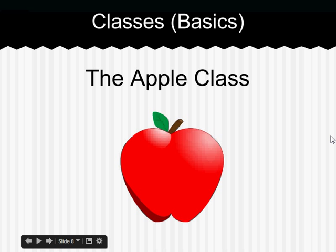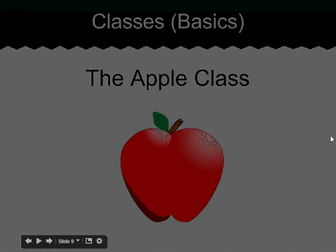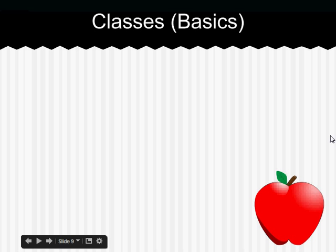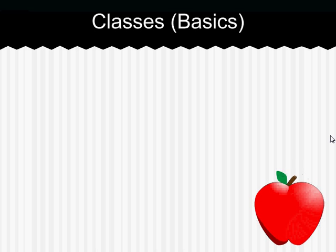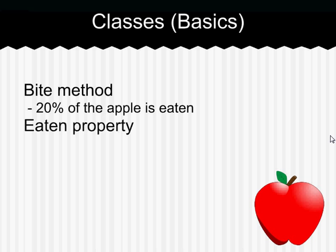Classes are a slightly more advanced concept, although they're somewhat similar. So, we're going to make an apple class. Now, it's going to need a few key components. We're going to have a bite method, which works like the insert and remove methods, but it only applies to apples. And it's going to take off 20% of the apple. The eaten property is going to show how much of the apple is eaten.